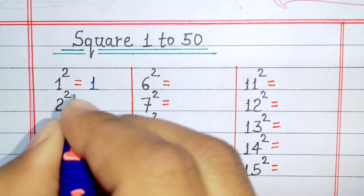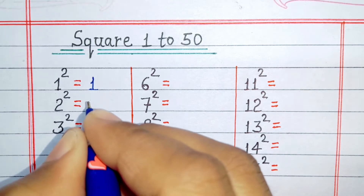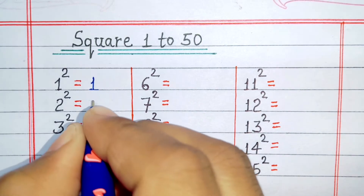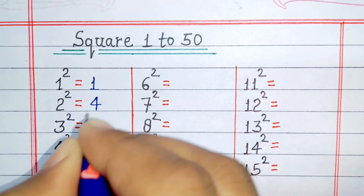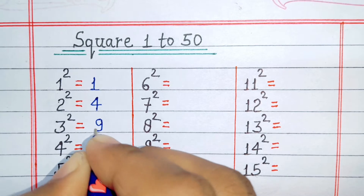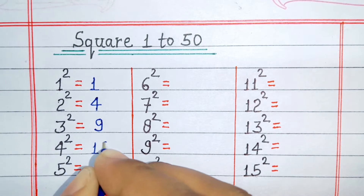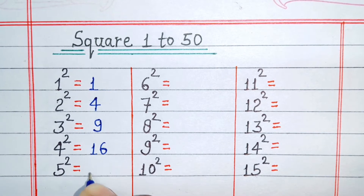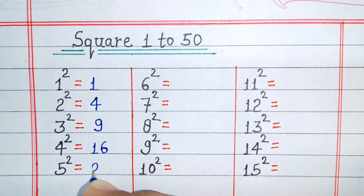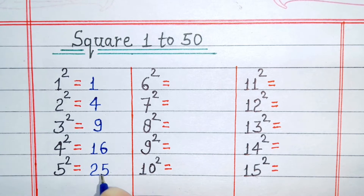Square of 1 is 1. Square of 2 is 4. Square of 3 is 9. Square of 4 is 16. Square of 5 is 25.